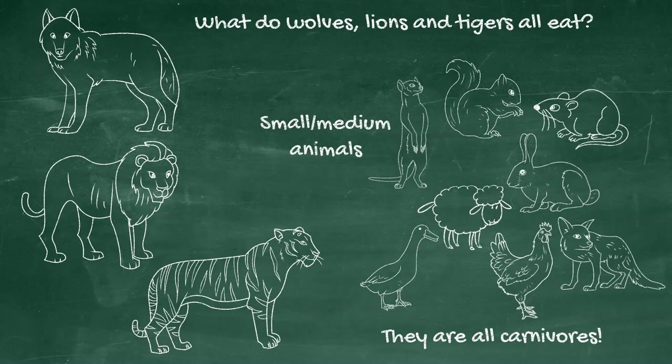So they just eat small to medium-sized animals and they're all carnivores. So I didn't put wolf, lion, and tiger with snakes because snakes eat things like bugs and things like that, and they don't eat bugs. Wolves, lions, tigers, they don't really eat insects.